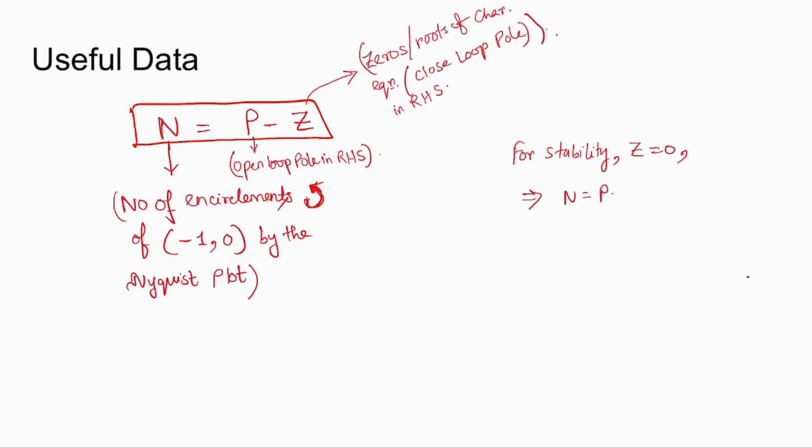Where P is the open loop poles in RHS, Z is the closed loop poles in RHS. So for stability, Z is zero. That is, the number of closed loop poles in the right hand side of the s-plane must be zero for the system to be stable. So for that to happen, N equal to P.